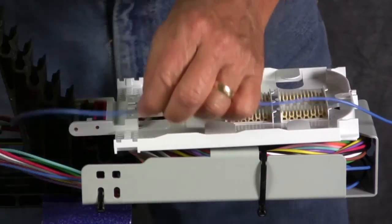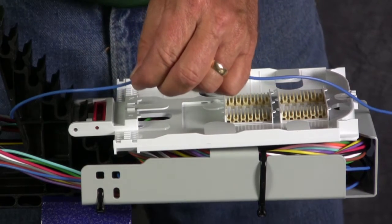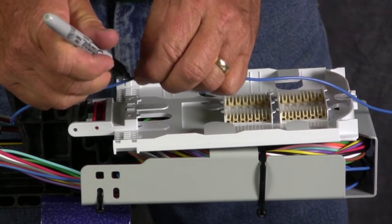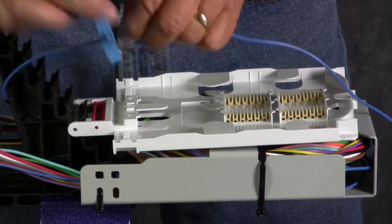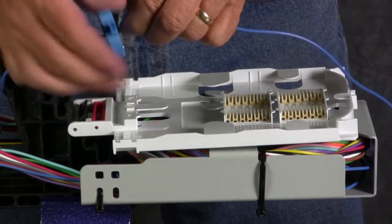Bring the buffer tube around the tray tower to the tray and mark the buffer tube for position to either ring cut or shave buffer tube to expose fibers for splicing.